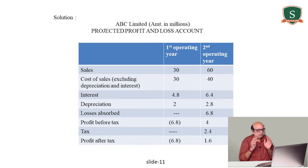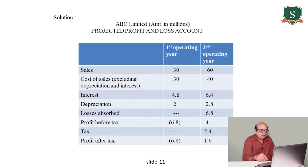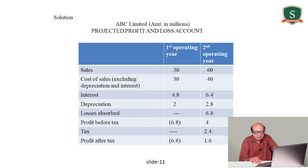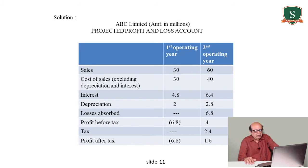Projected profit and loss account for ABC Limited (amounts in millions). First operating year: sales 30, cost of sales 30, interest 4.8, depreciation 2. Profit before tax: 30 minus 30 minus 4.8 minus 2 equals minus 6.8. Since there is a loss, no tax is applicable in the first operating year. Profit after tax is also minus 6.8.